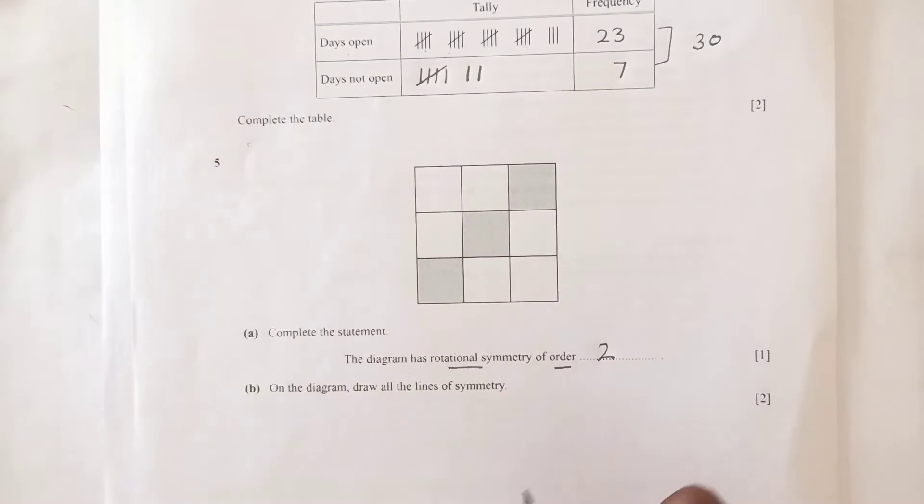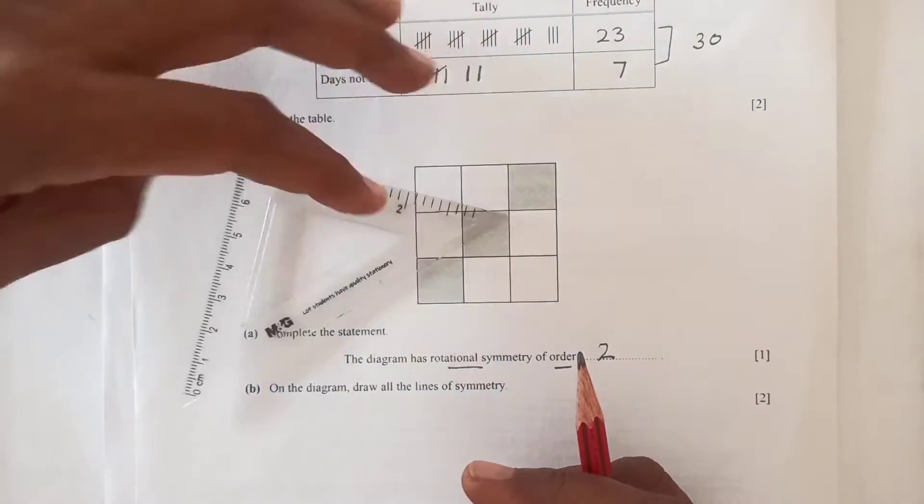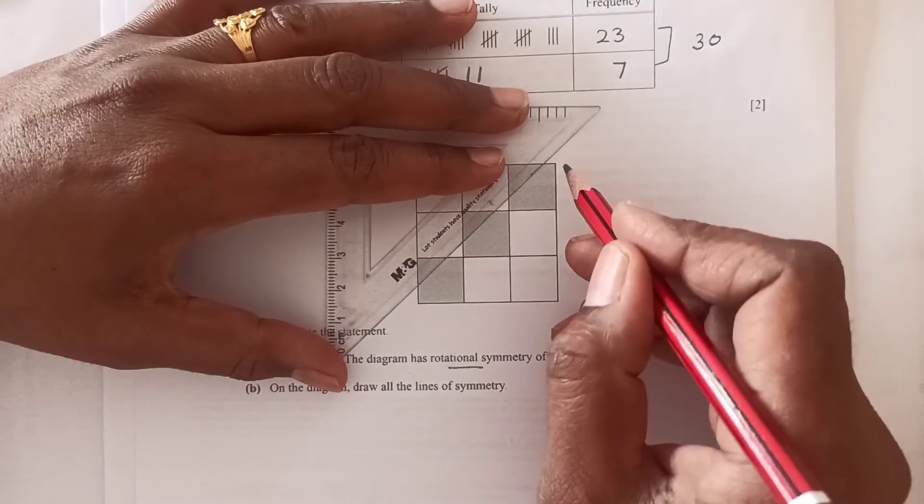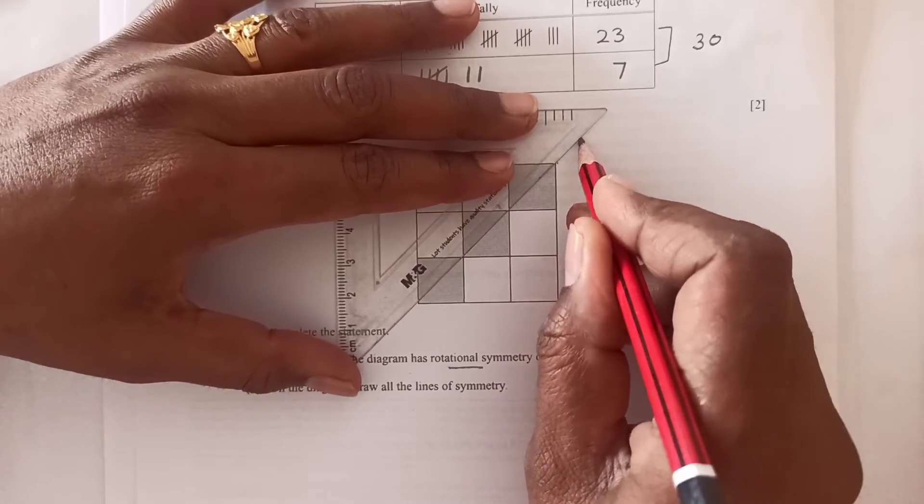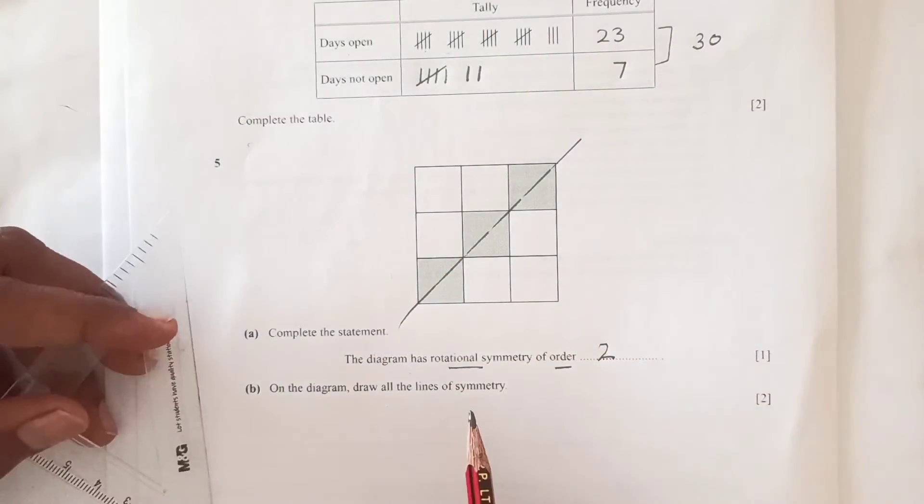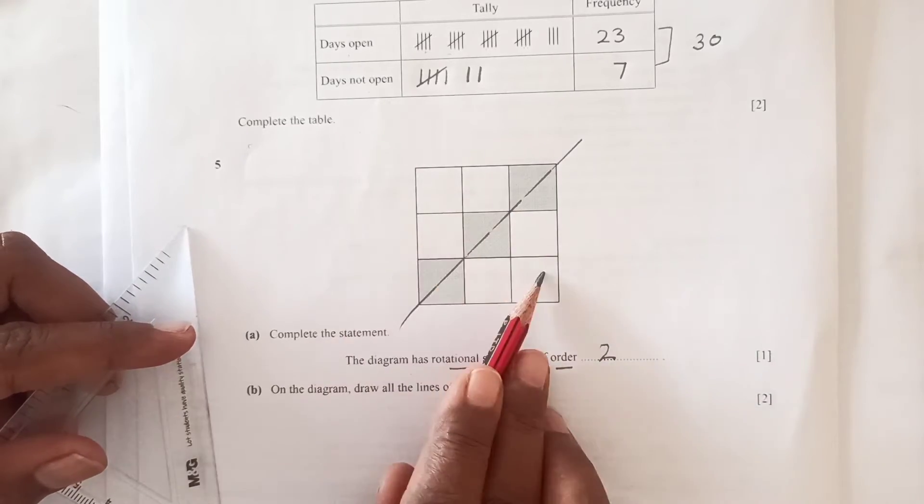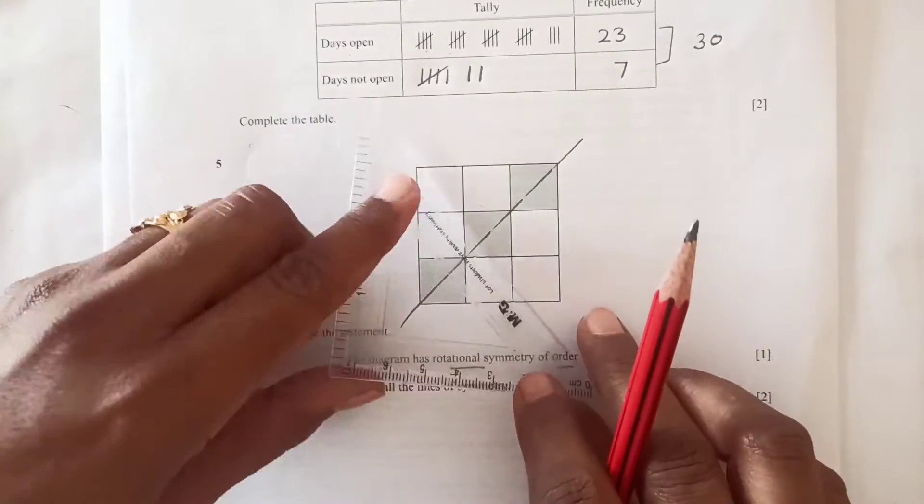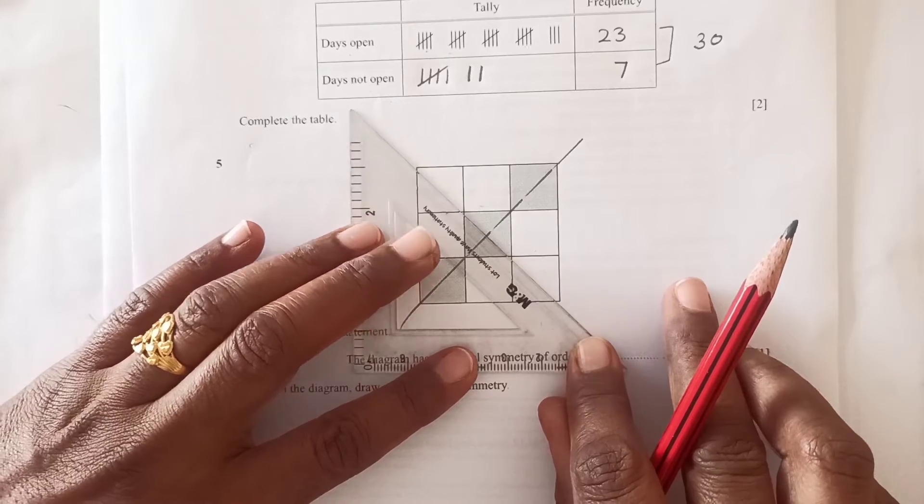On the diagram, draw all the lines of symmetry. For line of symmetry, we have this side one line of symmetry. He said all the lines, so we will have only two lines. This is the mirror image of the other one, another one here this side.